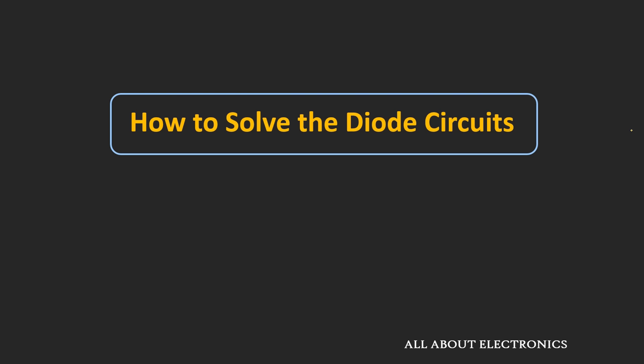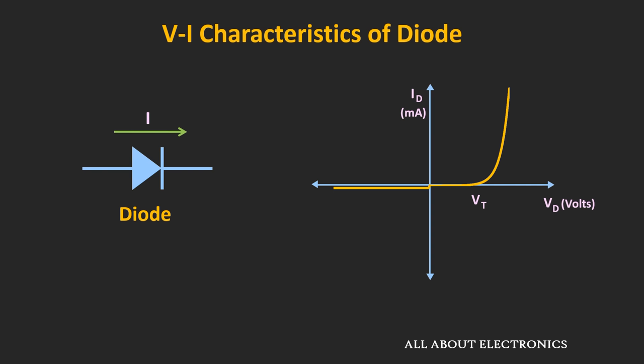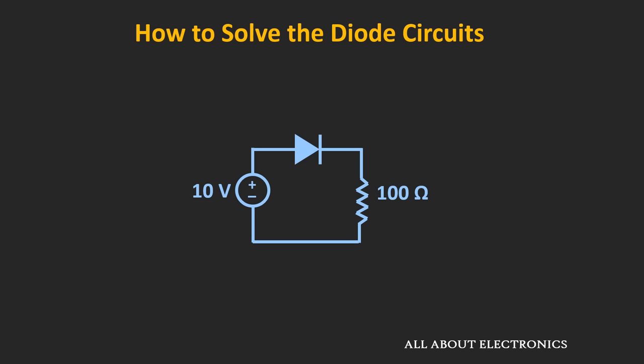Hey friends, welcome to the YouTube channel all about electronics. In the previous videos on diodes, we understood what a diode is and we had also seen the VI characteristic of the diode. Now, suppose if this diode is connected in a particular circuit, then first we need to find whether this diode is conducting or non-conducting, and if it is conducting, what is the voltage and current in that circuit. So in this video, let's learn how to solve diode circuits and how to find the voltage and current in circuits which contain diodes.